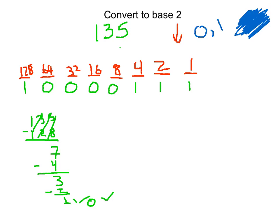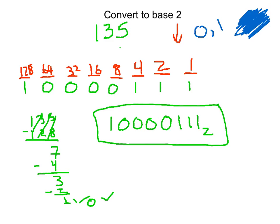So our final answer is 1, 0, 0, 0, 0, 1, 1, 1 in base 2 — written as 10000111 base 2. This is the same thing as 135 in base 10.